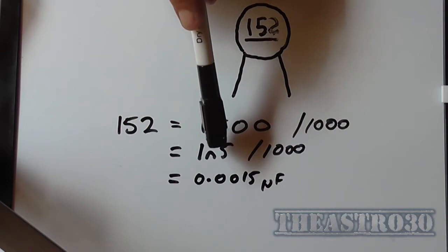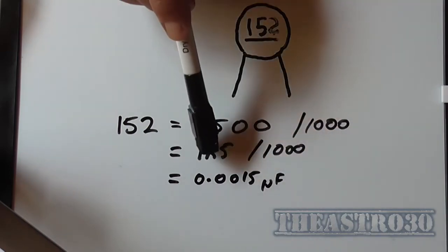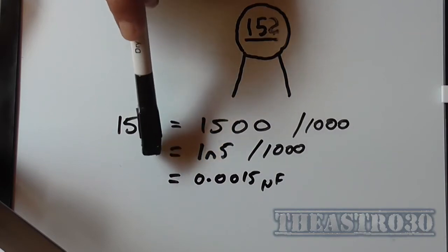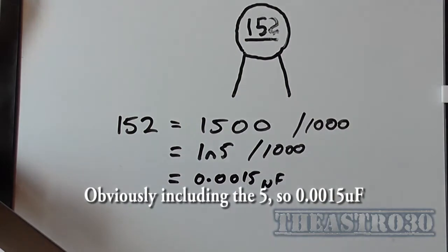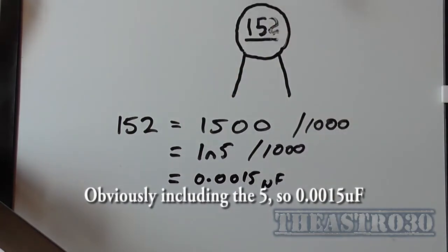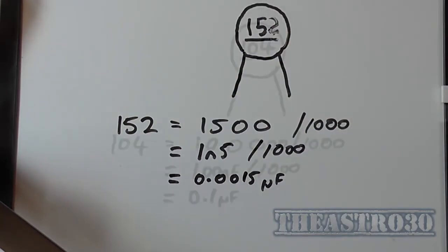And if we divide that nanofarad figure by 1000, we're moving the decimal point back three places—one, two, three—so we end up with 0.0015 microfarad. And that's how to work out these codes. Let's take another example.